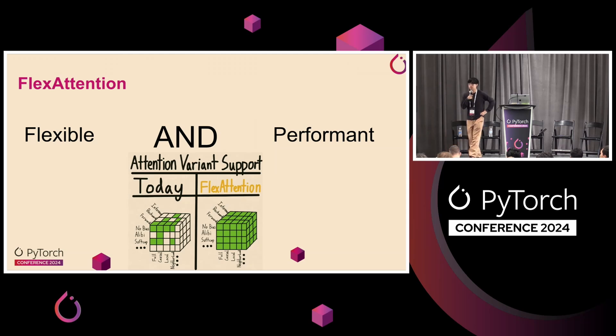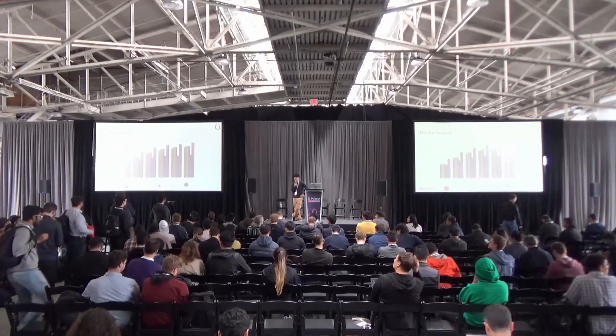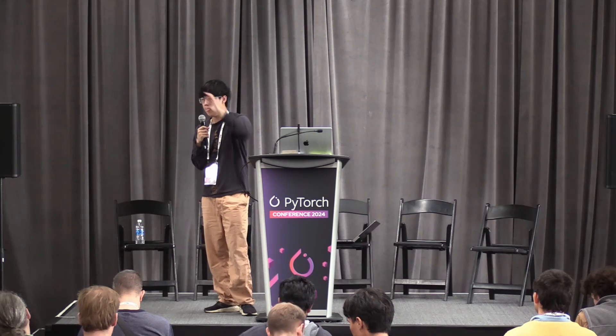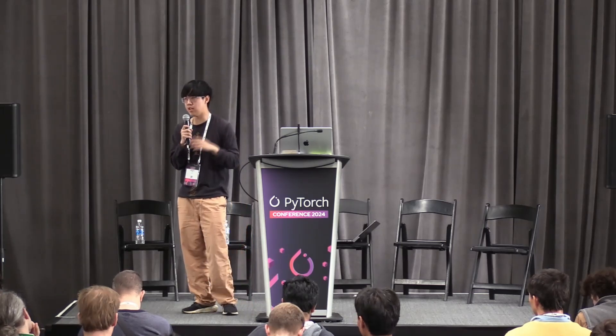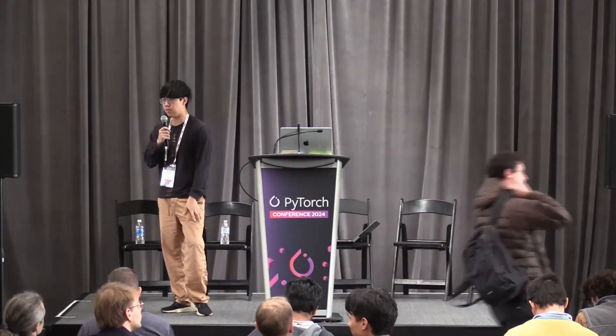Q: Is the performance benefit mainly from fusing ops, or is there something more? What is the adversarial case where this would not give enough performance? A: It's a bit different because the specific semantics of score mod are that it takes scalar tensors. Pretty much any pointwise function you do can be fused into the attention kernel, so it's actually quite hard to come up with pathological cases. More specifically, if it succeeds in running, it'll be fused — there's no case where it succeeds and isn't fused.